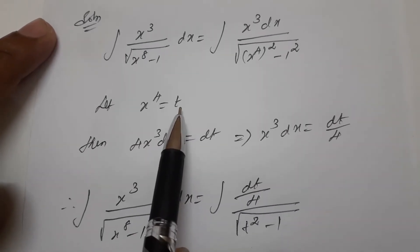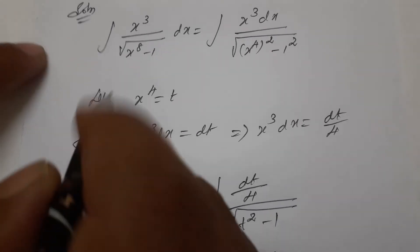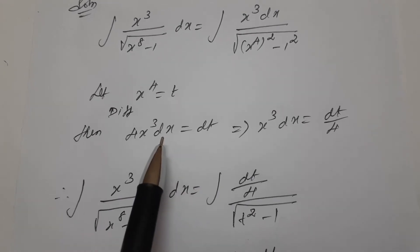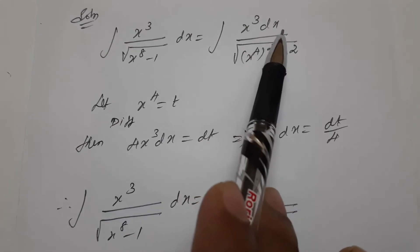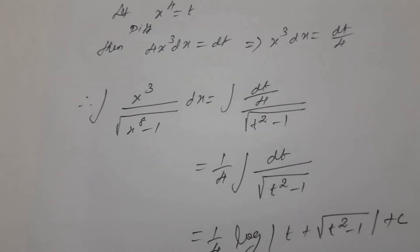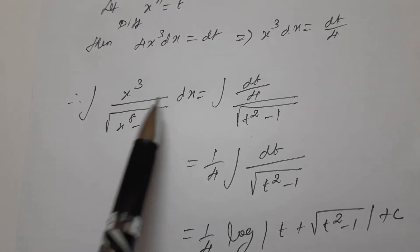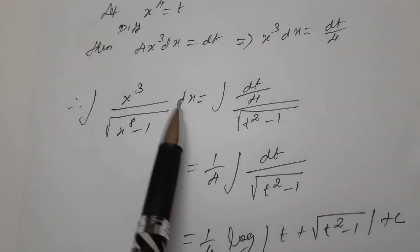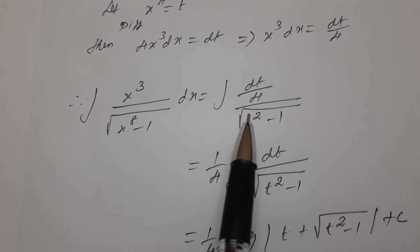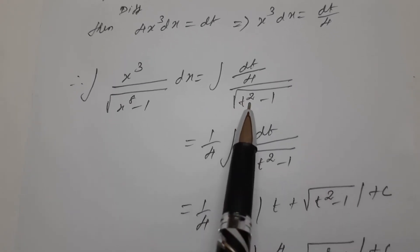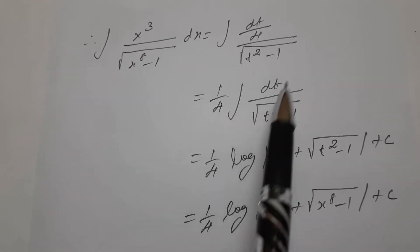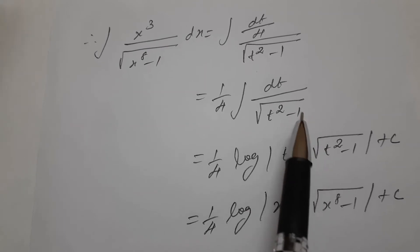Let x power 4 equal to t. Therefore 4 x cube dx equals dt, so x cube dx equals dt by 4. We can apply the substitution. Therefore, integration of x cube divided by square root of x power 8 minus 1 into dx is equal to one by 4 integration dt divided by square root of t square minus 1. This is the formula we know.